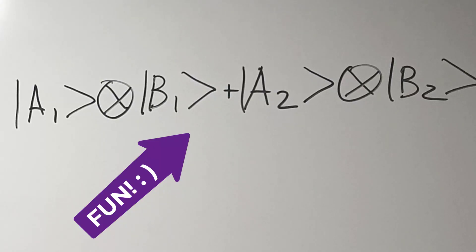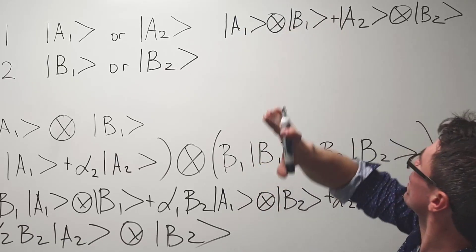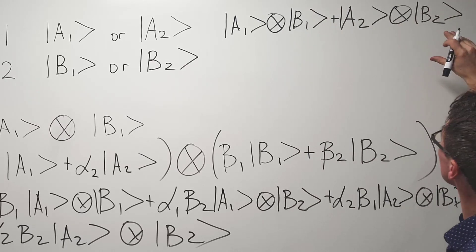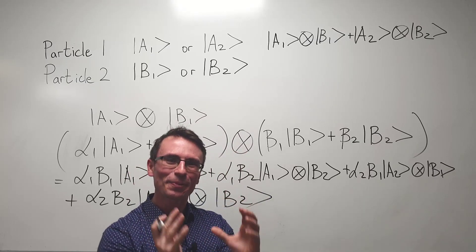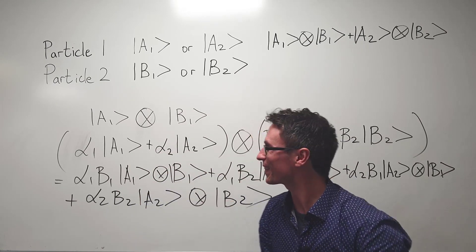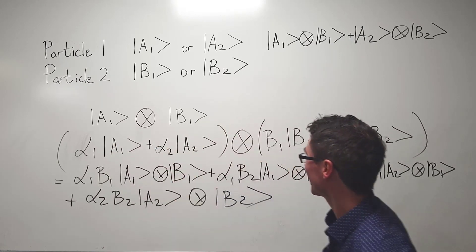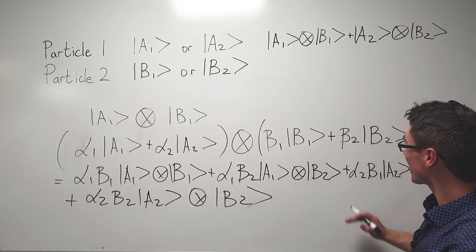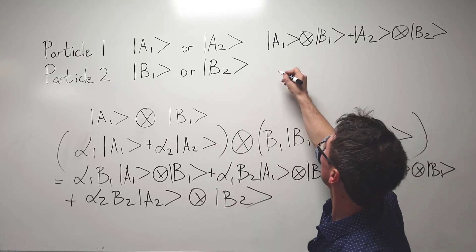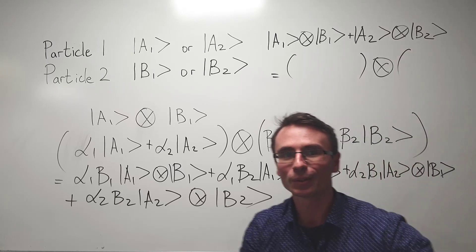Let's consider a more fun state though. This here is another possibility: particle one being in state a one and particle b being in state one, or particle one being in state two and particle two being in state two. Here is where the spooky bit of quantum entanglement really comes in. This general state we could have written as a term which corresponds to whatever particle one is doing and a term that corresponds to whatever particle two is doing. Is it possible to write this state in terms of whatever particle one is doing and then multiply by whatever particle two is doing?